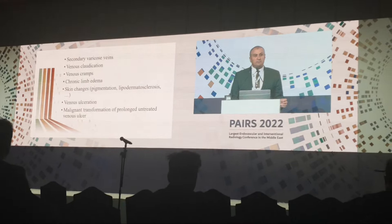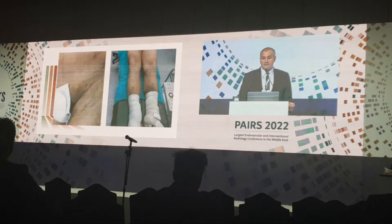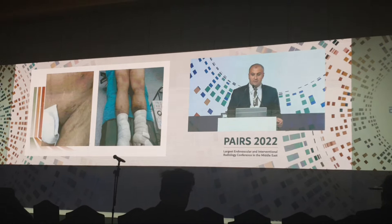This picture shows, on both the left and the right, ulcerated venous ulcerations with skin pigmentation and dermatosclerosis.